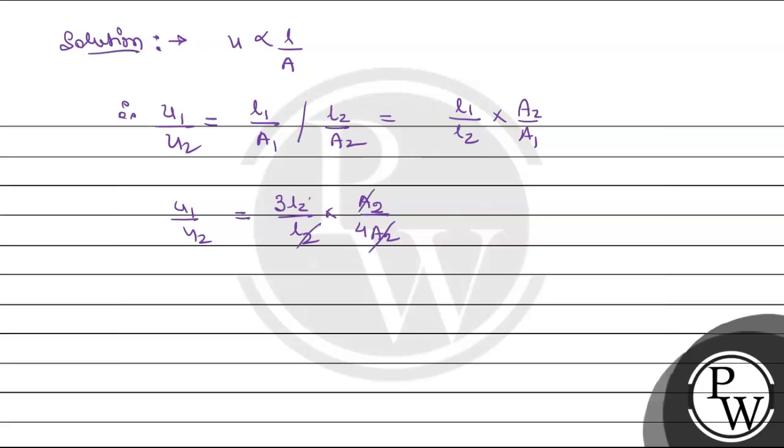So a2 cancels, l2 cancels. Value becomes 3 is to 4.